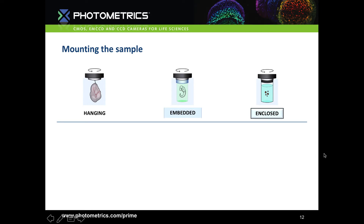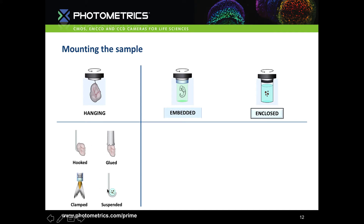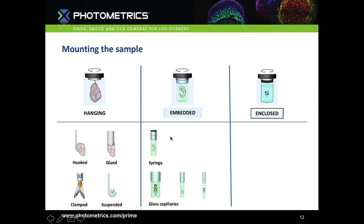There are generally three ways of mounting a sample in a conventional lightsheet system — and a lightsheet system is designed around the sample, so you want to know your sample first. The first method is hanging, typically hooked, glued, clamped or suspended. The second is embedded, typically in a syringe or glass capillary. The final method is enclosed, in FEP tubing, polymer foil, or an agarose beaker, which is probably the most common mounting position.